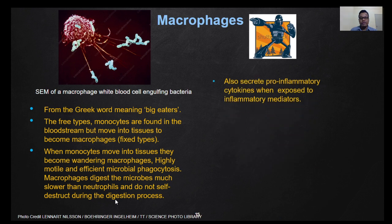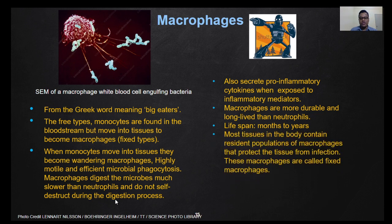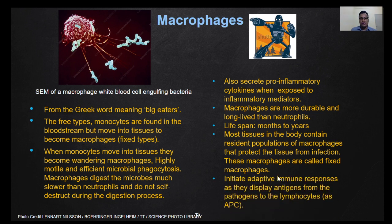Macrophages digest microbes much slower than neutrophils and do not self-destruct during the digestion process. They also secrete pro-inflammatory cytokines when exposed to inflammatory mediators. Macrophages are more durable and live longer than neutrophils, with a lifespan of months up to years. Most tissues in the body contain a resident population of macrophages that protect the tissue from infection — these are called fixed macrophages. They also initiate adaptive immune responses by displaying antigens from digested pathogens to T cells.